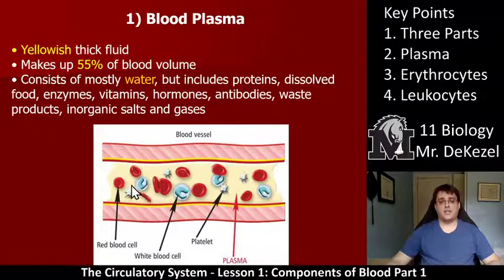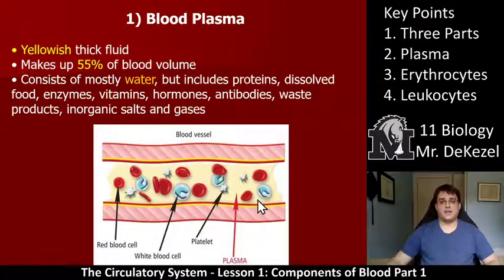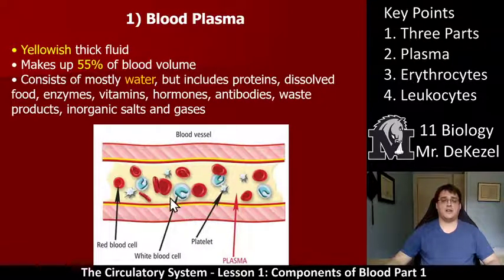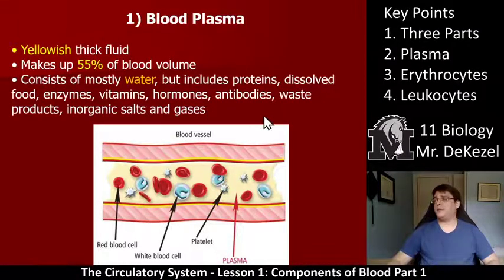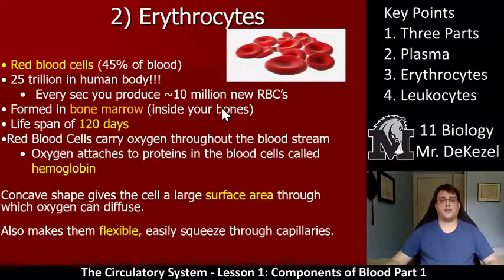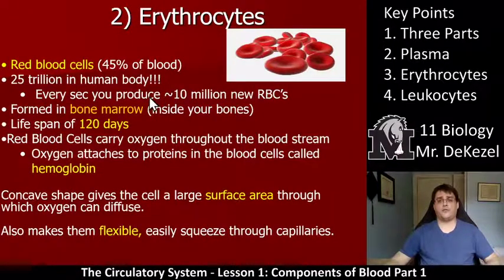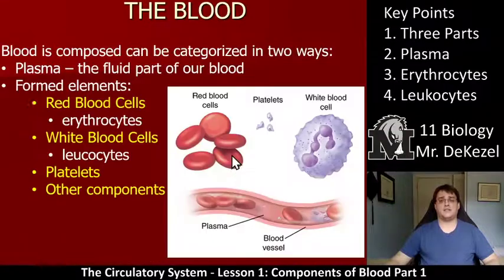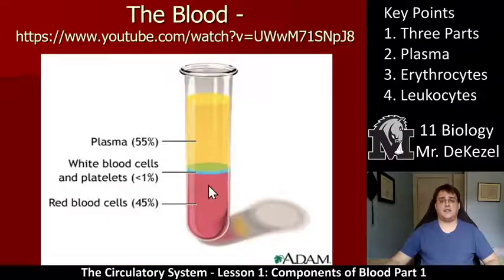In the diagram, the yellowish part is the blood plasma. The red blood cells are pretty obvious, same with the white blood cells. And then the platelets are these little spiky things. So that is number one for the parts. Number two, we have the erythrocytes, which made up 44-45% of the blood.